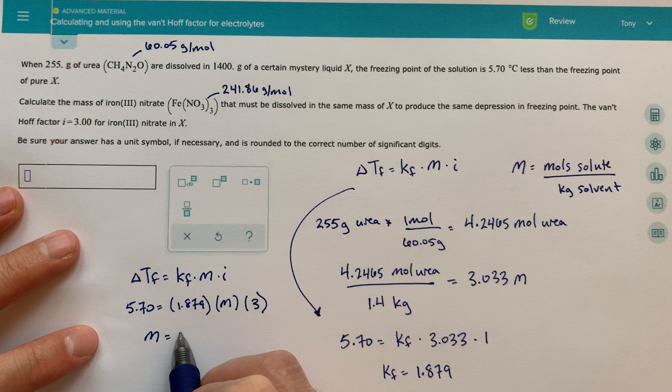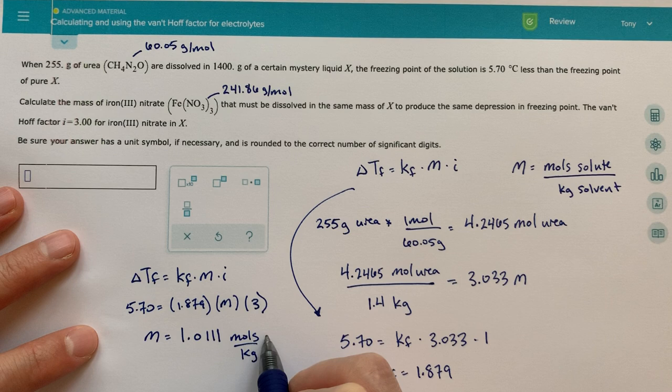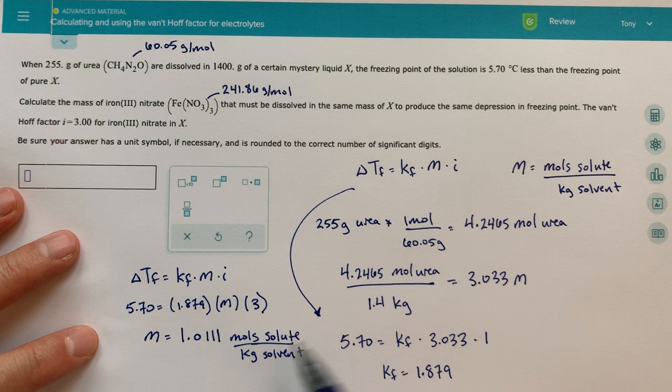So we can use this to solve for what our molality is. So I'm just going to go ahead and do that real quick. If we solve this for molality, we find we should have 1.0111. That's a lot of ones. And then the units for that are moles per kilogram. And actually we'll write moles of solute over kilograms of solvent. I think that will be a little bit more helpful for this next part. And I'm just getting this, right? This is just the definition of molality. It's the moles of solute divided by the kilograms of solvent.